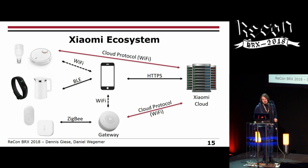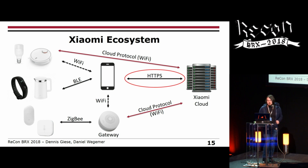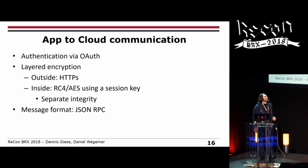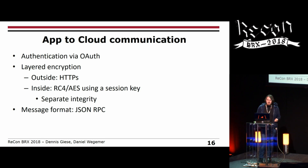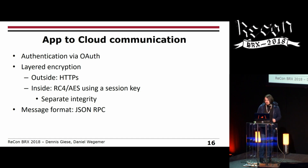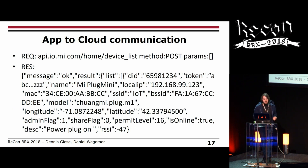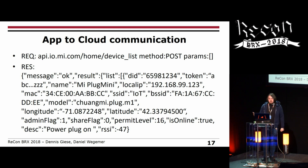Let's take a short look at the HTTPS interface between the app and the cloud. Identification is done over OAuth, and there is layered encryption: outside you have HTTPS protected with certificates, and inside you have RC4 encryption with a distinct session key. There is also integrity protection for the message. The message format is JSON. Here is an example: the app asks to get a device list for the user, and the response from the cloud returns which devices belong to that user, including coordinates.